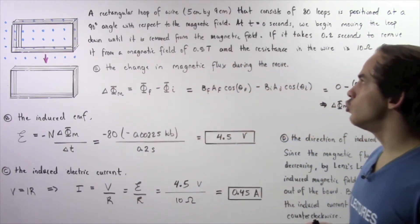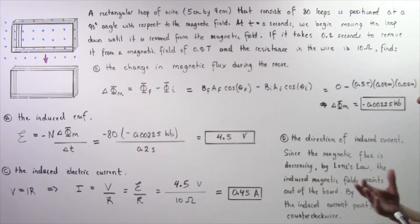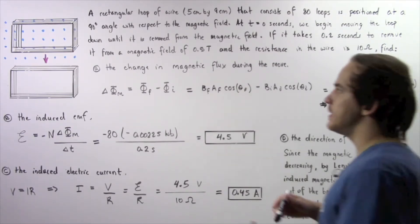Suppose a rectangular loop of wire 5 centimeters by 9 centimeters that consists of 80 loops is positioned at a 90 degree angle with respect to the magnetic field. Now at a time of 0 seconds, we begin moving the loop down until it is completely removed from our external magnetic field.